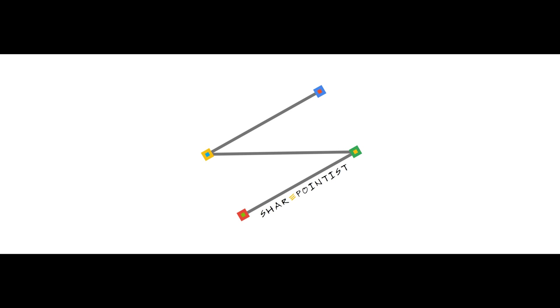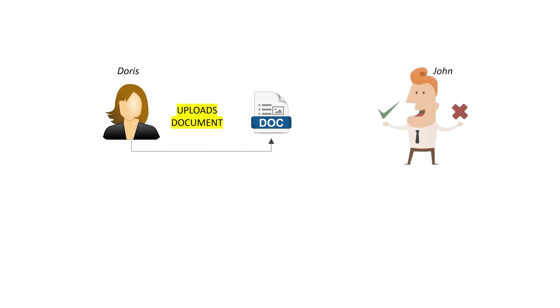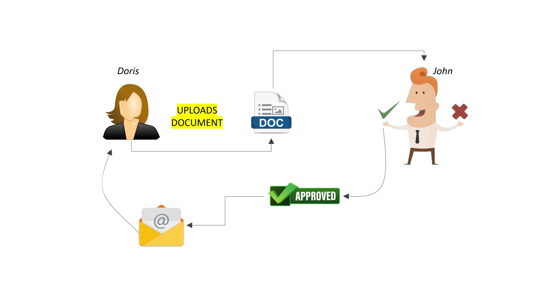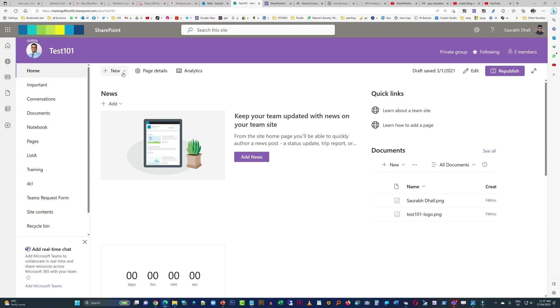Hello everyone, my name is Saurabh and today we will look at a very basic process of document approval. Say Doris has a document which she wants to upload, but she wants someone to review it before it gets published. John is the reviewer — he decides if the document is approved, and an email will be sent to Doris letting her know. Same is the case with rejection: if it is rejected, an email will be sent to Doris along with comments from John explaining why it was rejected.